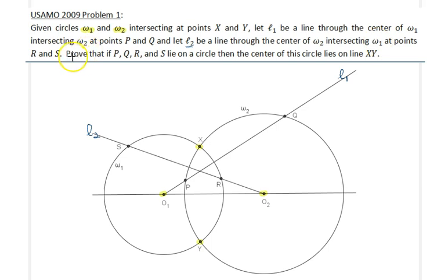Now the main question: prove that if those four points, namely P, Q, R and S, lie on a circle, then it must be the case that the center of this circle, namely the circumcircle of quadrilateral PQRS, lies on the line XY. So let's go ahead and draw that line, the line XY here. We would like to show that the circumcircle of quadrilateral PQRS must lie on this line.